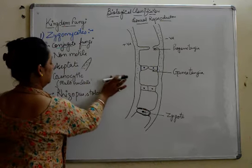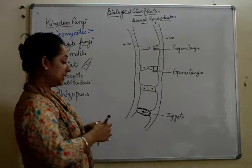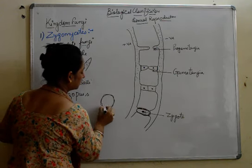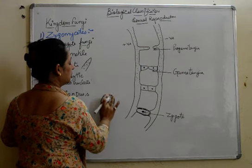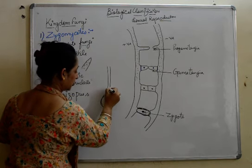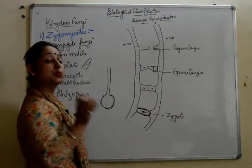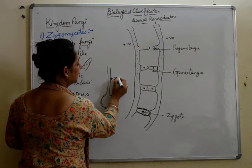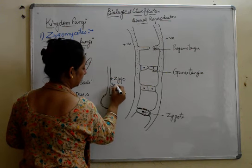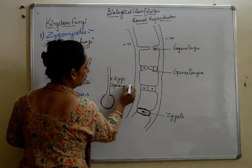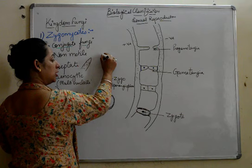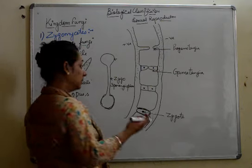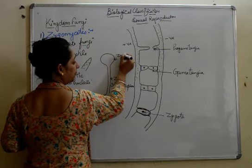When the zygote detaches, this zygote with its thick layer around it gives rise to a vertical extension — similar to what we saw in asexual reproduction. But since this extension is coming out of a zygote, it will be known as a zygosporangiophore, which will have a swollen tip or bulb-like structure. In asexual reproduction it is called sporangium, but here it is called a zygosporangium.